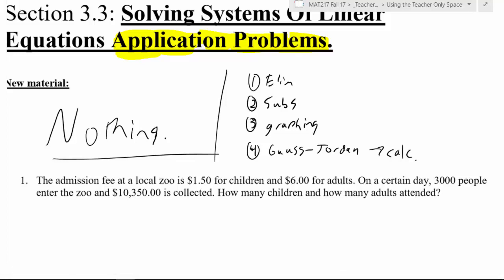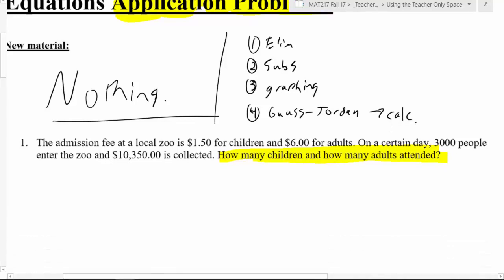So as I told you guys in a previous section, I always recommend first to find your variables. And that can usually be found in the last sentence. What is the thing we are looking for? So we are going to have C for the number of children and maybe A for number of adults.